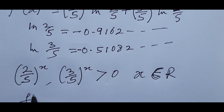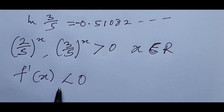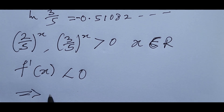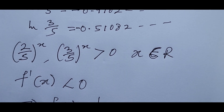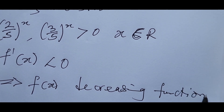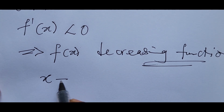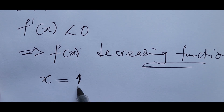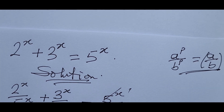With this, it means f'(x) is less than zero, which implies that f(x) is a strictly decreasing function. Every strictly decreasing function has at most one real solution — it cannot have more than one. Therefore x = 1 is the only real root that satisfies the original equation, and that is what we have proven.